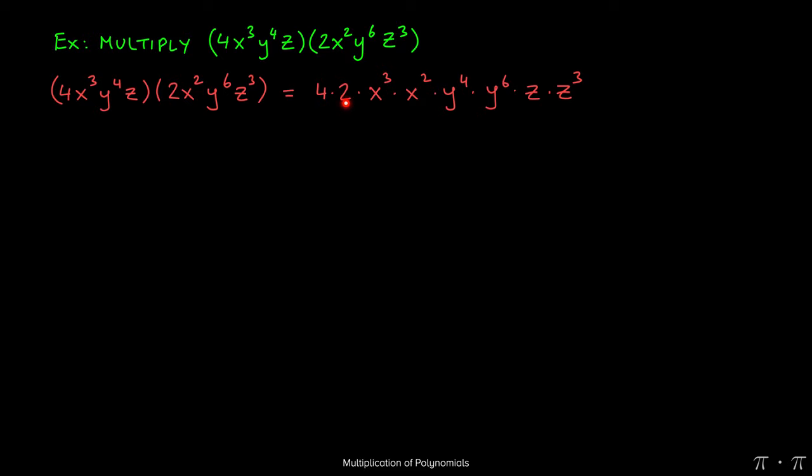Now at this stage, 4 times 2 will give us 8. Because the bases are the same here and the terms are being multiplied, we can apply the product rule of exponents, which states that we should add the exponents. The same will apply for y's and z's.